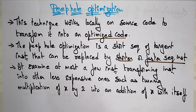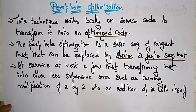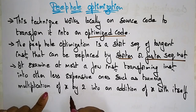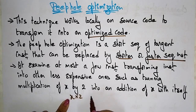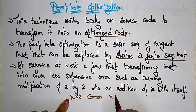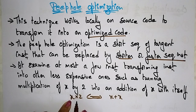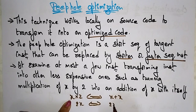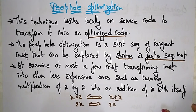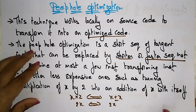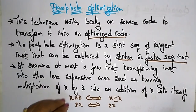Instead of using more expensive operators, it uses less expensive ones. For example, x multiplied by 2 (which equals 2x) can be written as x plus x, since both are the same. So instead of writing the multiplication operator, it's better to write the addition wherever necessary. That is the use of peephole optimization — to transform these types of instructions.